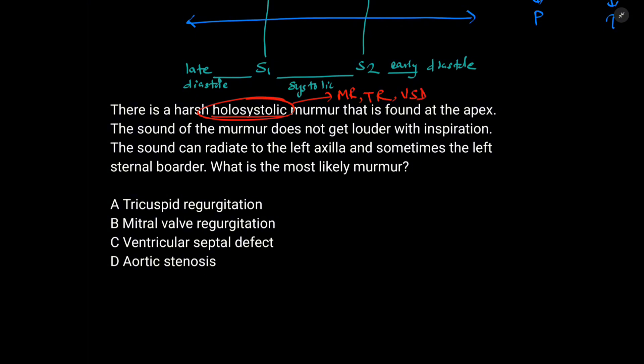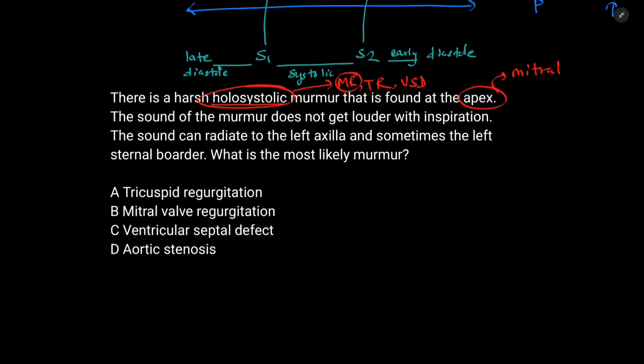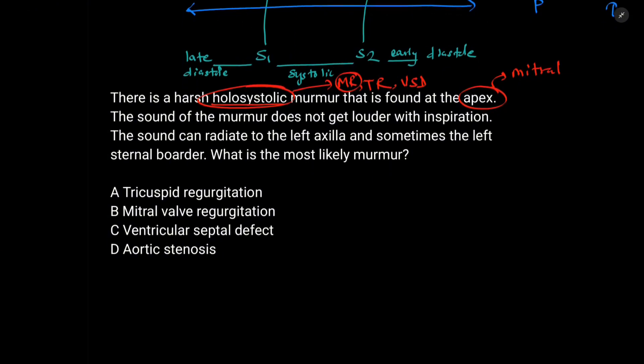And murmur that is found at the apex. Apex will represent the mitral. So from the first sentence only, we can probably guess that the murmur is of mitral regurgitation. But let's finish this question. The sound of the murmur does not get louder with inspiration.